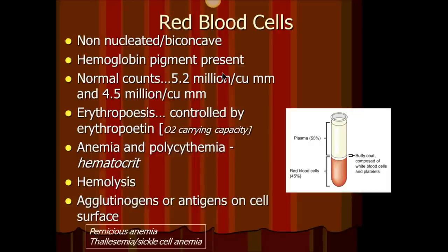Now let's look at red blood cells. Red blood cells are one of the few living cells in the body that do not have a nucleus — they are non-nucleated, which means they cannot divide and reproduce. They are also biconcave: very thin in the center and thicker on the sides, which helps them squeeze through narrow capillaries. They are red in color because of a pigment called hemoglobin, which has oxygen-carrying capacity — this is what binds to oxygen.